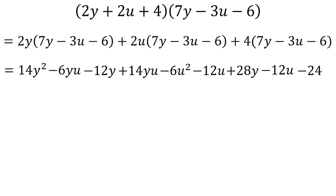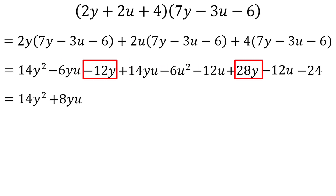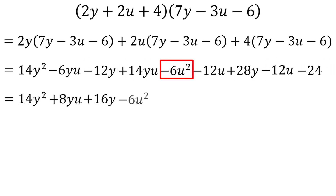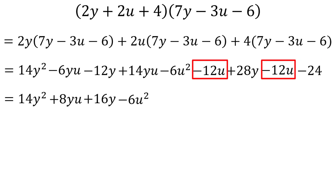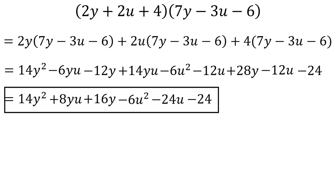Now let's combine our terms. We only have one y squared term, which is 14y squared. We have two yu terms — negative 6yu and 14yu — which together make 8yu. We have two y terms — negative 12y and 28y — which add up to 16y. The only u squared term is negative 6u squared. We have two u terms — negative 12u and negative 12u — which together make negative 24u. We only have one constant, which is negative 24. Altogether our answer is 14y squared plus 8yu plus 16y minus 6u squared minus 24u minus 24. That completes our video discussing multiplying polynomials using the distributive property.